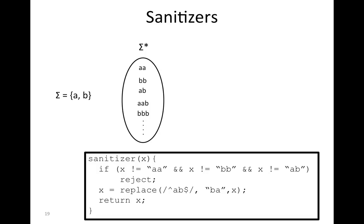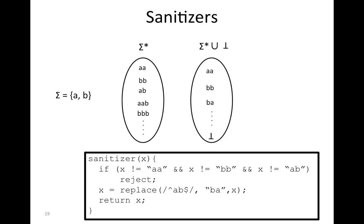So the domain of the function is sigma-star, and the dots here mean that it's infinite. The co-domain of the function is sigma-star union bottom. What we mean by bottom here is that it's a way of modeling rejecting invalid inputs — when a function rejects, we say that it maps its input to bottom.